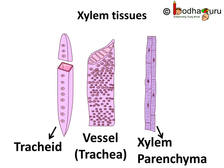Coming to the structure of cells, xylem is made of four kinds of cells: tracheids, vessels, xylem parenchyma, and xylem fiber. These cells have thick walls. Tracheids, vessels, and xylem fibers consist of dead cells. Only xylem parenchyma cells are living cells. The xylem parenchyma stores food and helps in sideways conduction of water.